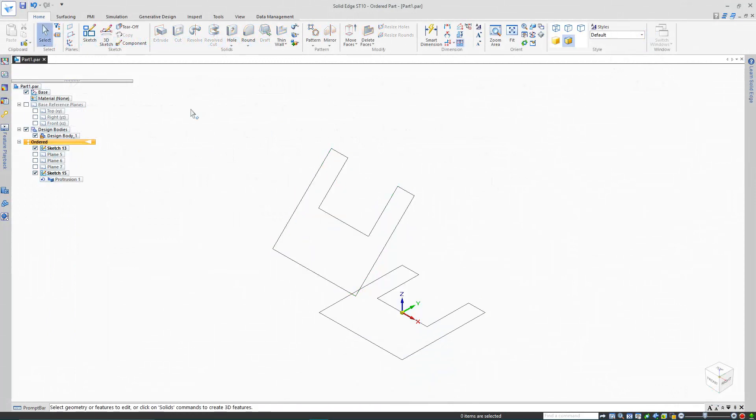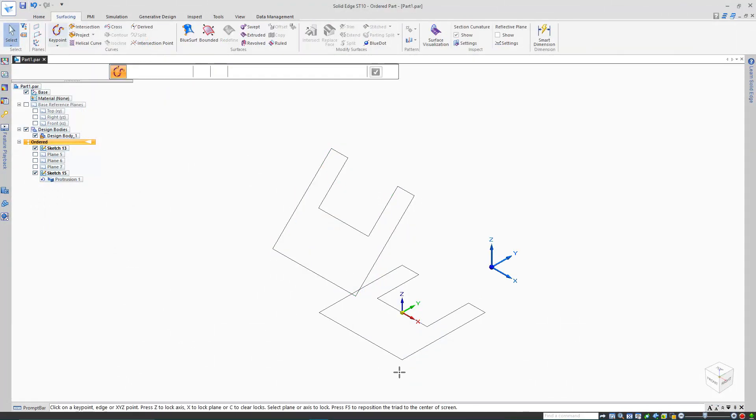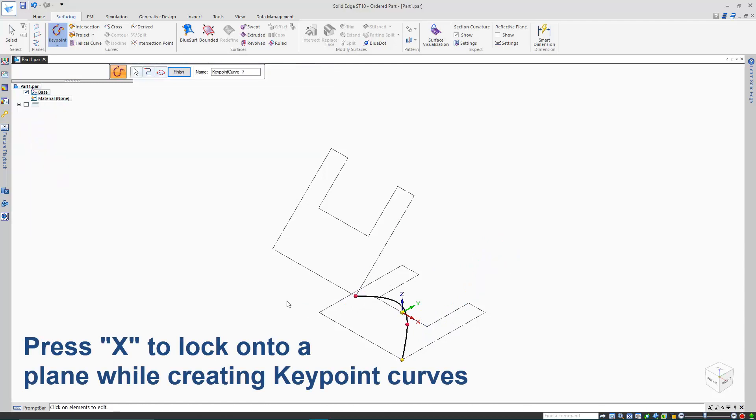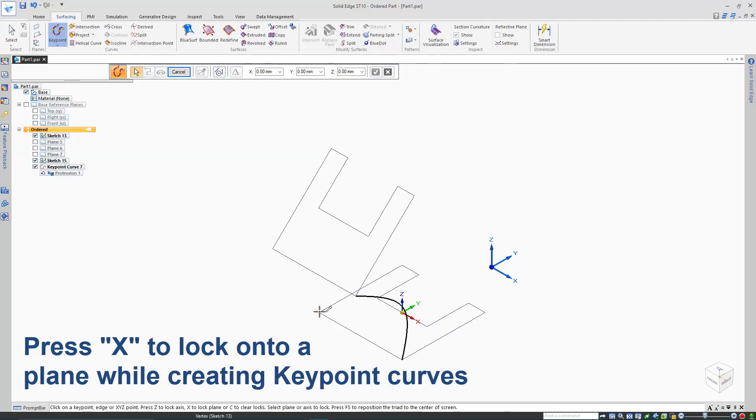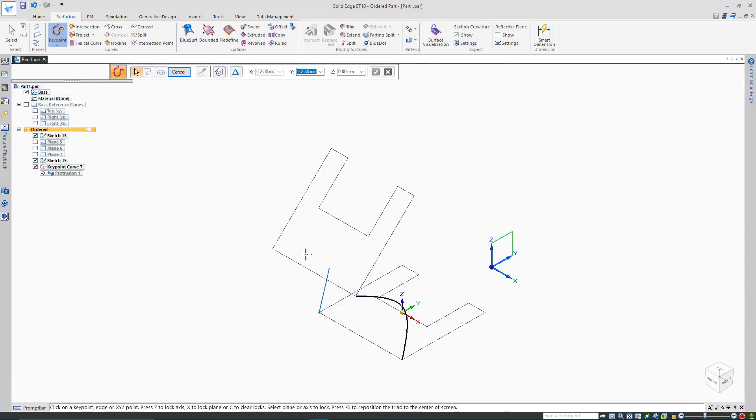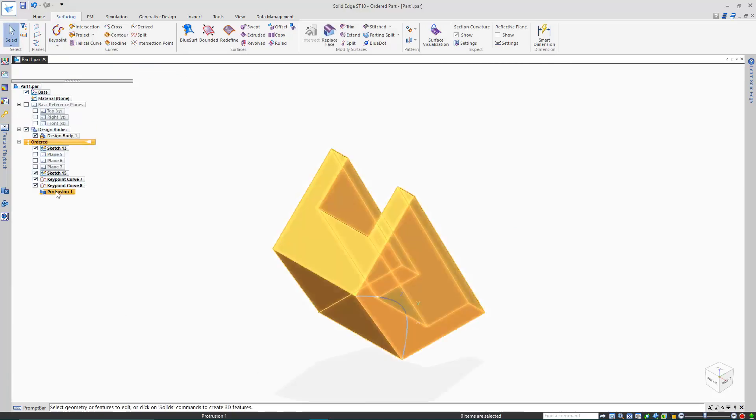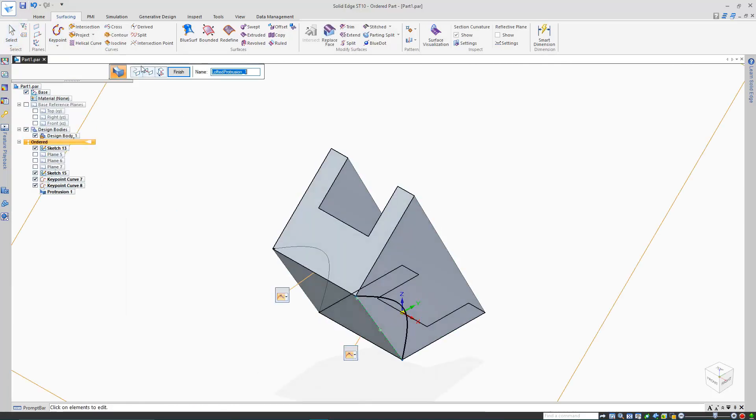I'll probably need some guide curves for this loft I want to create, so let's add two. One at each of these corners. Then create additional keypoints, which can be moved around in 3D space later. And now I'll instruct my loft surfaces to follow these curves, generating a much more organic shape.